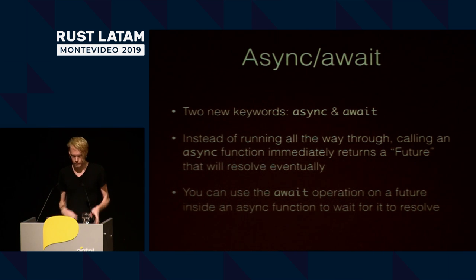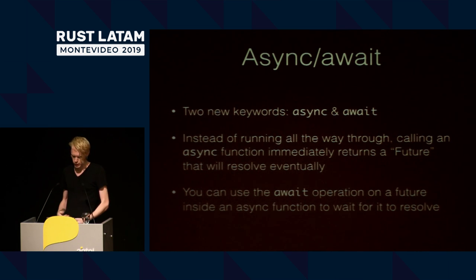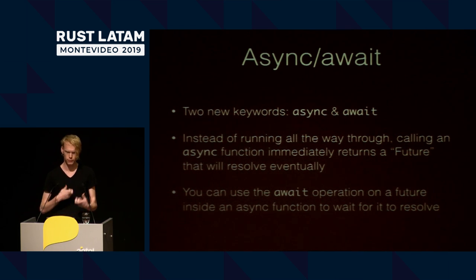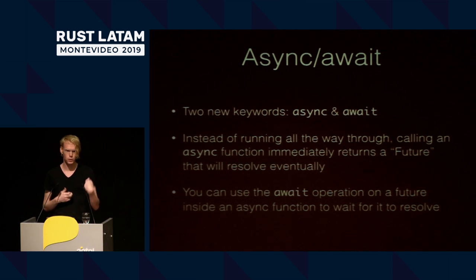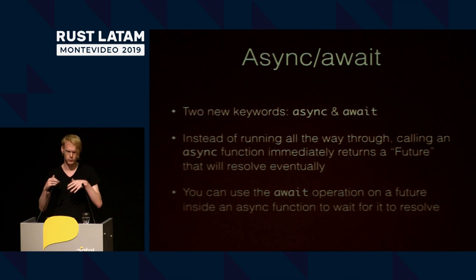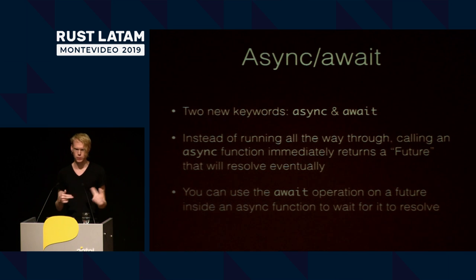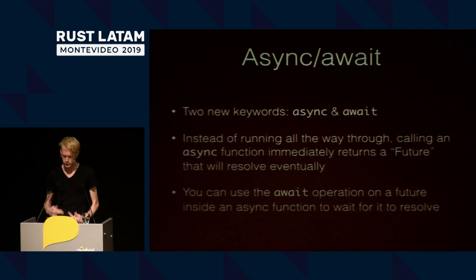Async Await — it's just these two new keywords we're adding to the language: Async and Await. Async is a modifier that can be applied to functions, where instead of running all the way through and returning, the function returns immediately and returns a future that will eventually resolve to whatever the function would return. Inside an async function, you can take the Await operator and apply it to other futures, which will pause the function until those futures are ready.